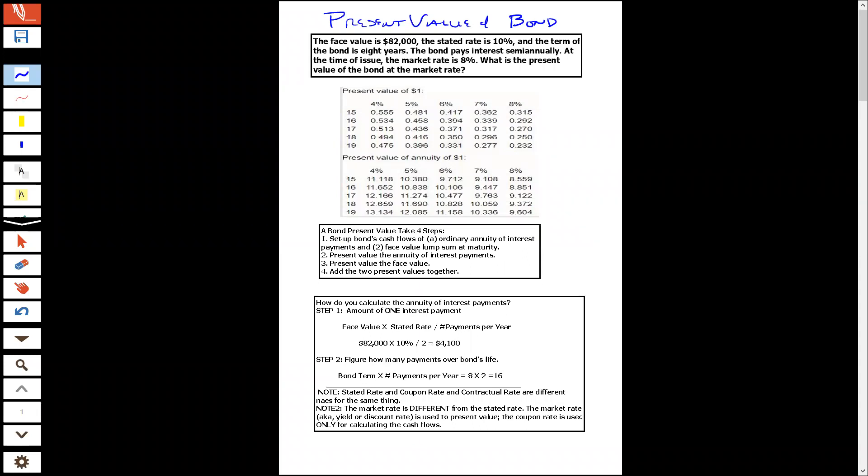So basically, it's four steps if we look down here. First, you're not just doing a present value problem with a bond. What you have to do is set up your present value problem. So you're going to calculate an annuity, in particular an ordinary annuity, of interest payments. Ordinary annuity just means the payments start after the present value date. And then in addition to the interest payments, when you issue a bond, you'll also have to pay the face value of the lump sum at the maturity date.